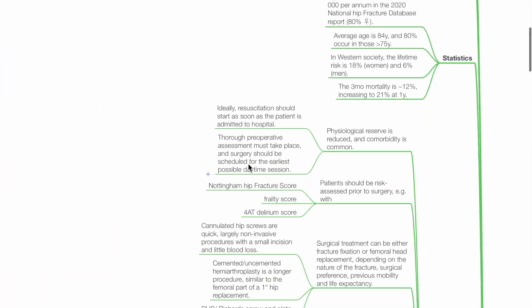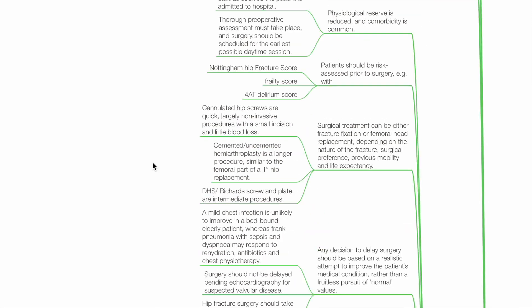Pre-operative. Physiological reserve is reduced and comorbidity is common. Resuscitation should start as soon as the patient is admitted to hospital. Time pre-op assessment and surgery to be scheduled during the earliest possible daytime session. Patients should be risk assessed prior to surgery, for example, with Nottingham Hip Fracture Score, Frailty Score and 4AT Delirium Score. Surgical treatment can be either fracture fixation or femoral head replacement, depending on nature of fracture, surgical preference, previous mobility and life expectancy.